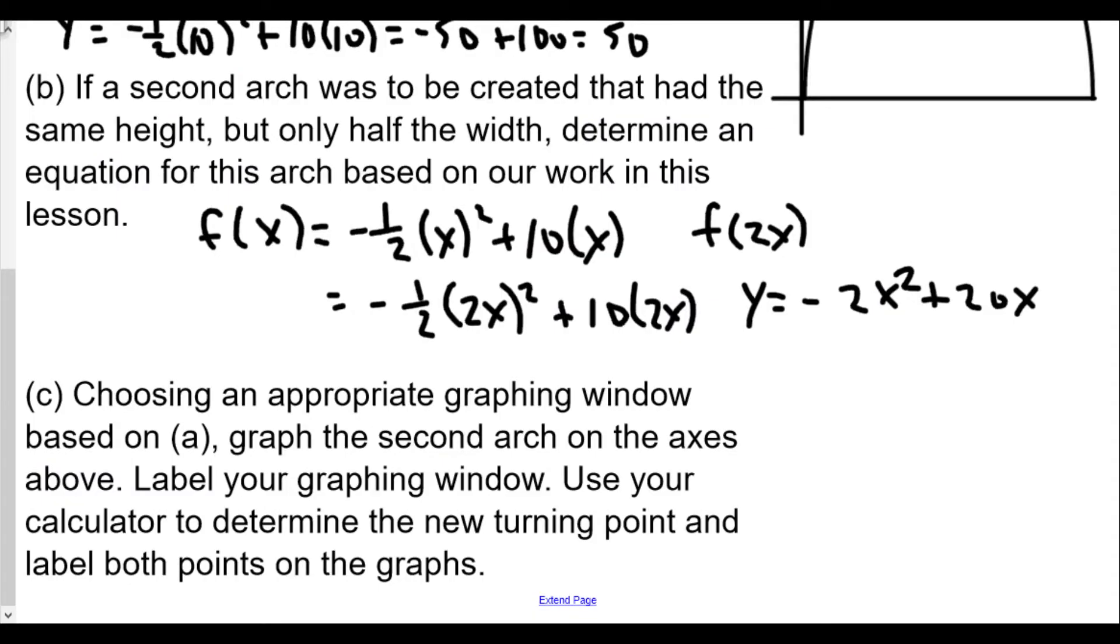So it says here choose appropriate graphing window on A. So our graphing window for A, our graphing window, was x min 0, x max 20, y min 0, and y max 50. Alright. So that was our graphing window for A. Now, it says here, label your graphing window. Alright.